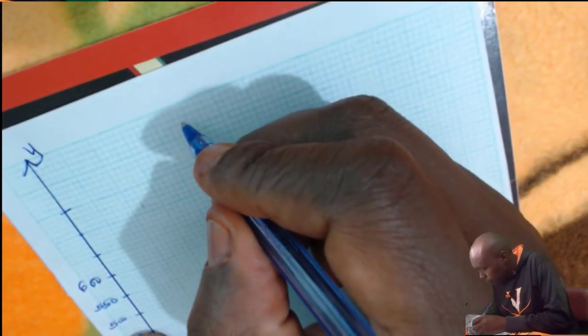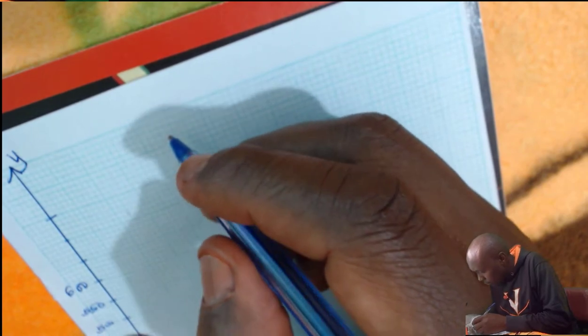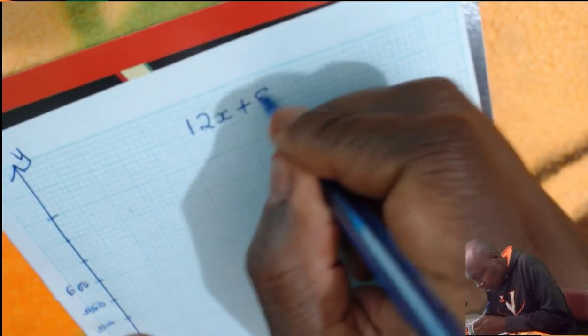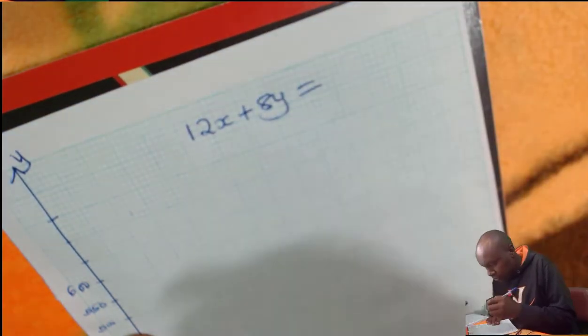if you're given the objective function as 12x plus 8y, 12x plus 8y, that is the objective function.